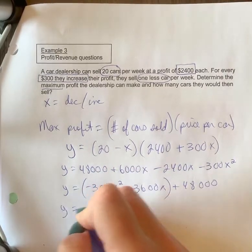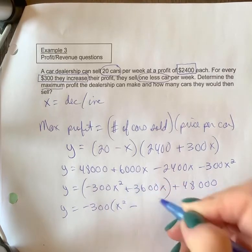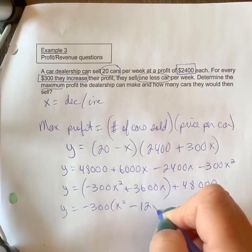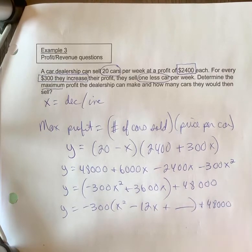We're going to group that, we're going to factor out the negative 300—that'll change this sign. We're going to put in our blank and we'll leave that 48,000 there.